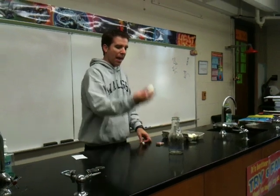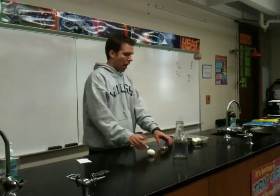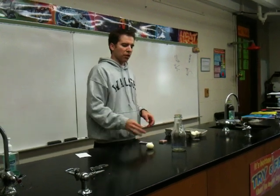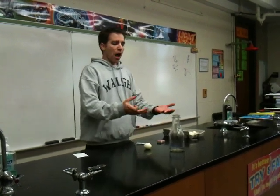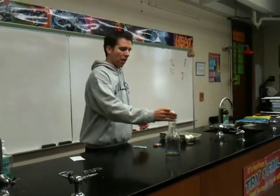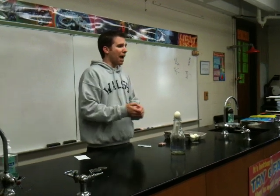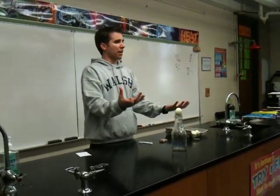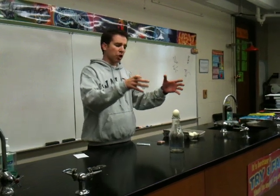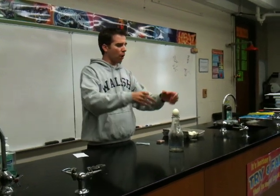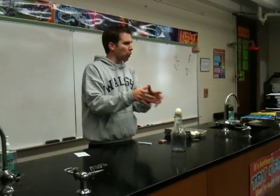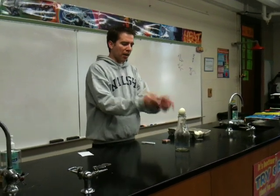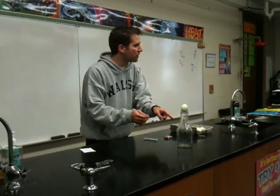So we have here a milk bottle and an egg. What I'm going to do is basically light this on fire and place it inside. I'm going to place the egg on top as a seal. What's going to happen is the particles inside have already expanded because they got hot. Then they're going to cool down and become much closer together because they're going to condense, and they'll create an area of low pressure on the inside.